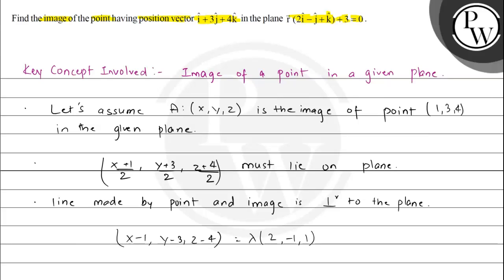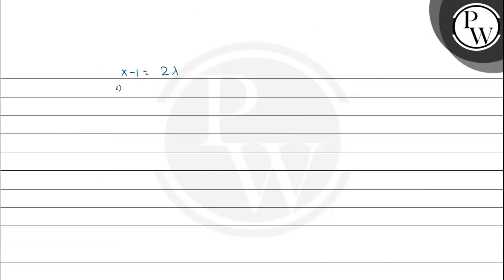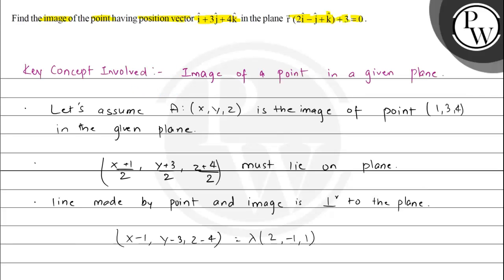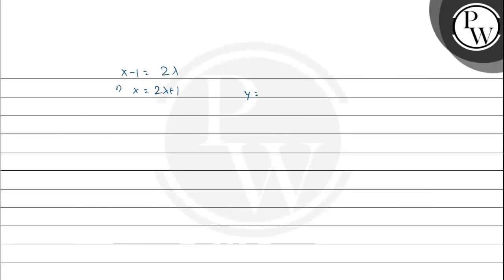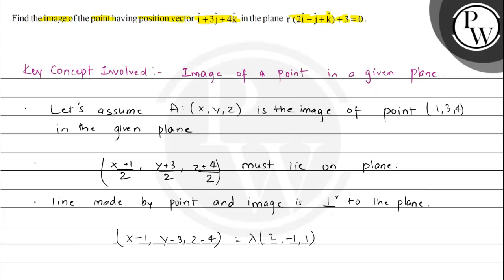From this, x minus 1 corresponds to 2 lambda, so x equals 2 lambda plus 1. Similarly, y equals 3 minus lambda, and z equals lambda plus 4.